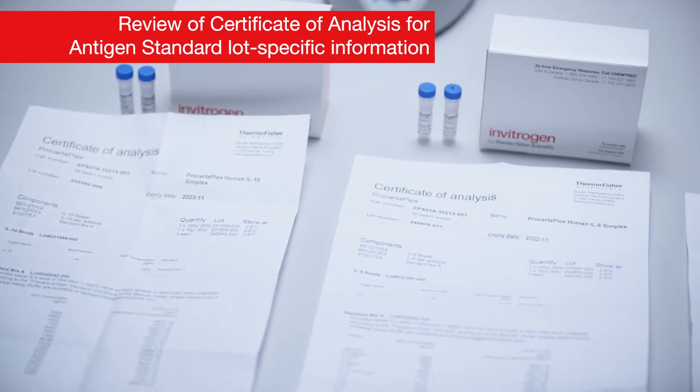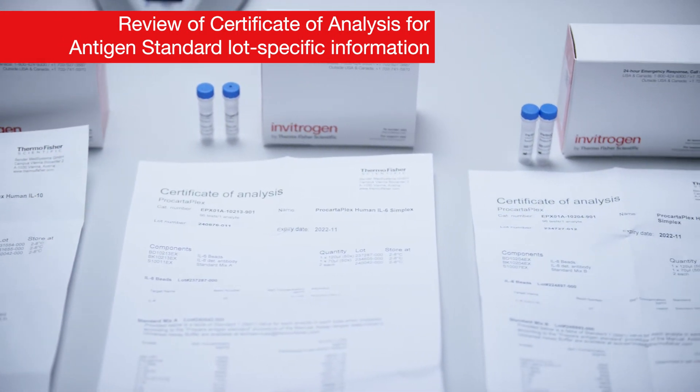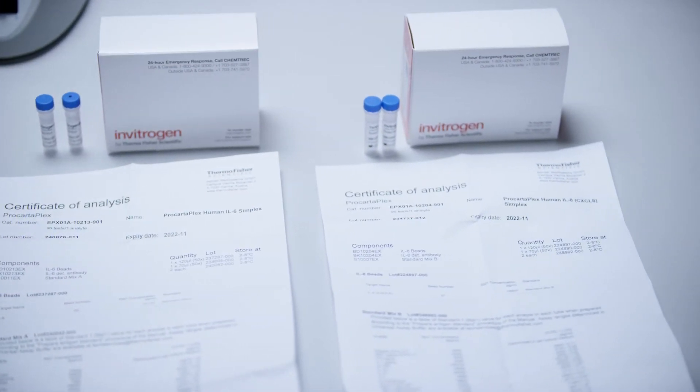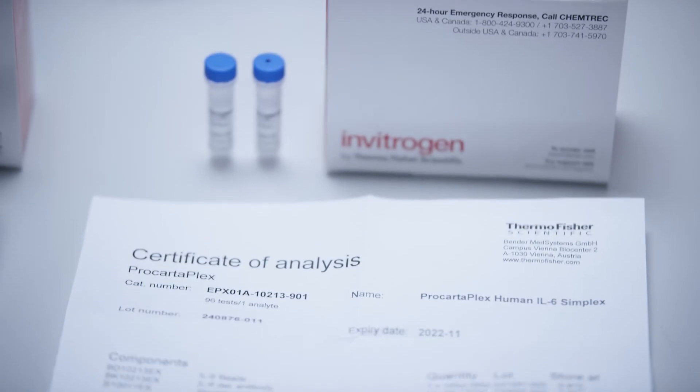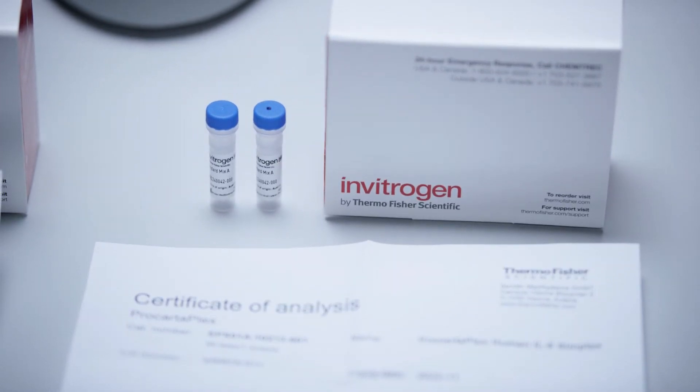Each ProCartaPlex simplex kit is shipped with two identical vials of each antigen standard to permit the user to run the assay twice, if running a partial plate. Carefully review the Certificate of Analysis for lot-specific information on the kit components and take the needed antigen standard. Only one vial of each antigen standard set is necessary to prepare the complete standard curve. Some simplex combinations contain several different sets of antigen standards that require pooling prior to use in the assay.